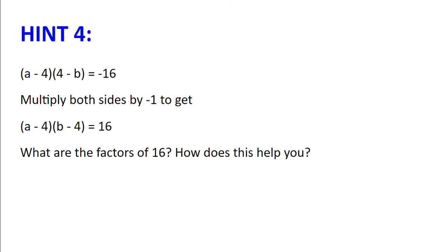Hint number 4: a minus 4 multiplied by 4 minus b equals minus 16. Multiply both sides by minus 1 to get a minus 4 multiplied by b minus 4 equals 16. What are the factors of 16? How does this help you?